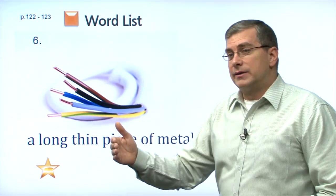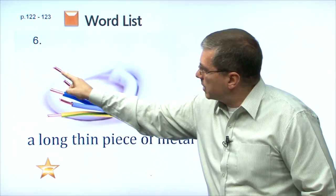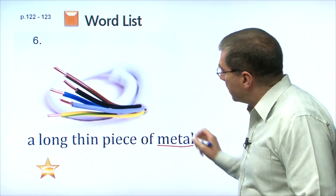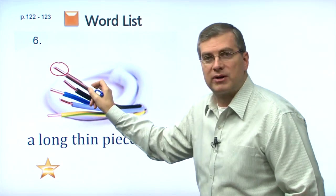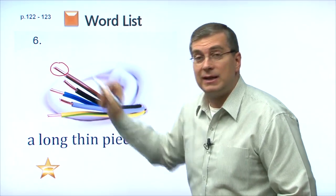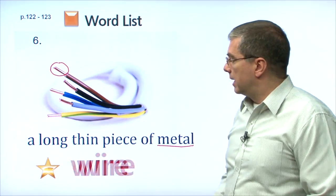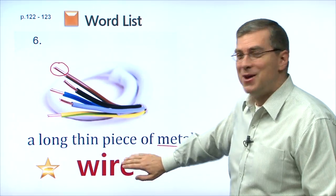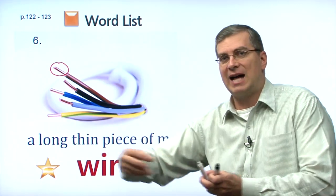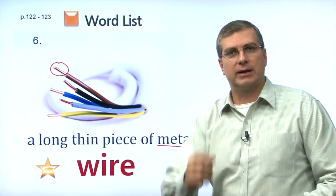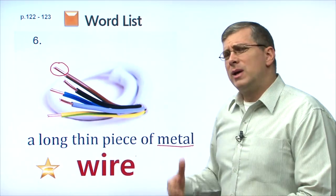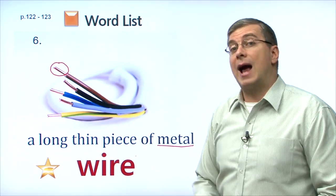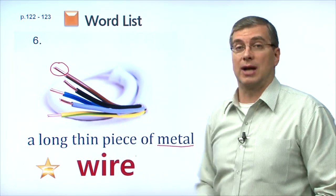Behind the outlet, we have these things. We're talking about the metal part here — a long, thin piece of metal. That's this part here. Not the plastic part on the outside, but inside the plastic is metal. What is this called? This is called a wire. Again, remember: without the E, it would be 'wir,' but with the E, stretch the I sound — wire. Electricity moves through the wire, goes to your outlet. There are wires inside your house.